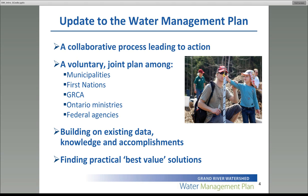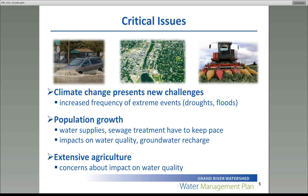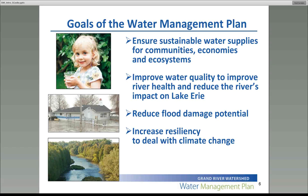We were building the water management plan update based on existing data and knowledge, reconfiguring some of the tools that we have, and today is a great example of that. Our goal is to find best value solutions to effectively manage water in the watershed. The management plan identifies three critical issues: certainly climate change, population growth, and extensive agriculture. The Grand River has about 70% of its land base actively farmed, and it certainly contributes to some of the challenges we have in the watershed. The goals are fourfold: ensure sustainable water supplies for communities, economies and ecosystems; improve water quality to improve river health and reduce the river's impact on Lake Erie; reduce flood damage potential; and increase resiliency to deal with climate change.